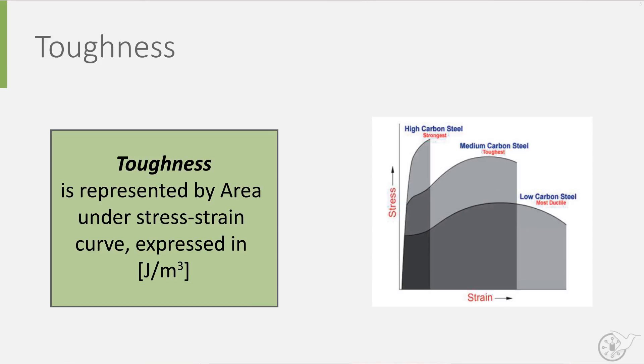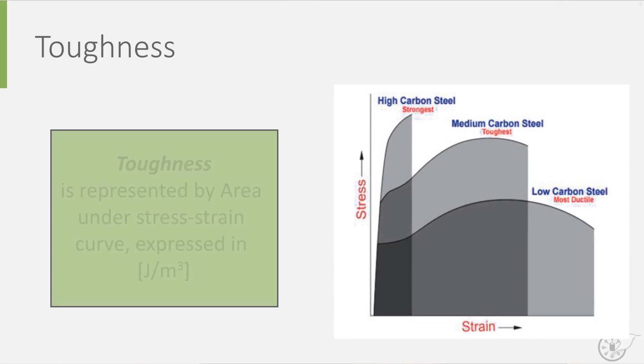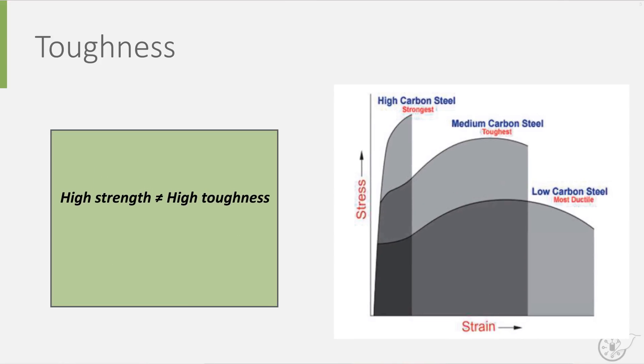If we look at the stress-strain diagram for three types of carbon steel, we can observe that high strength does not necessarily equate to high toughness.